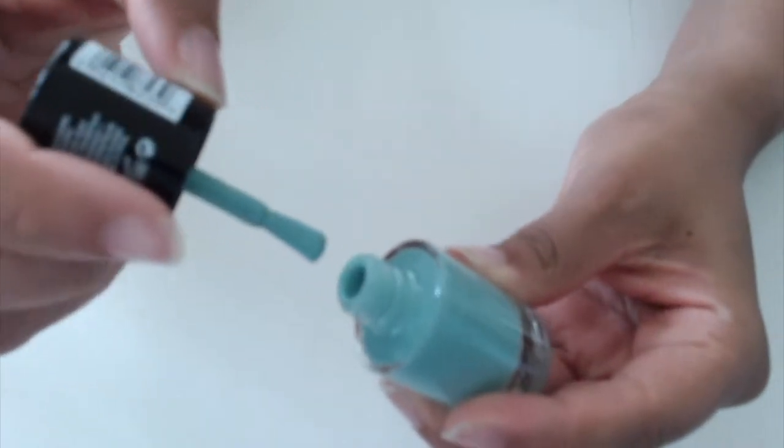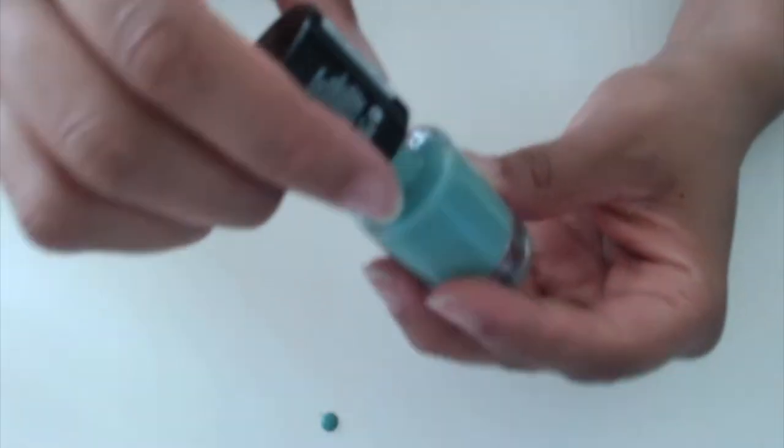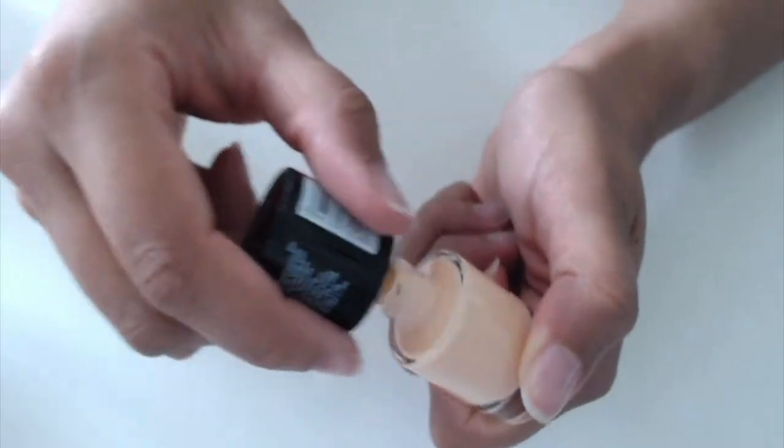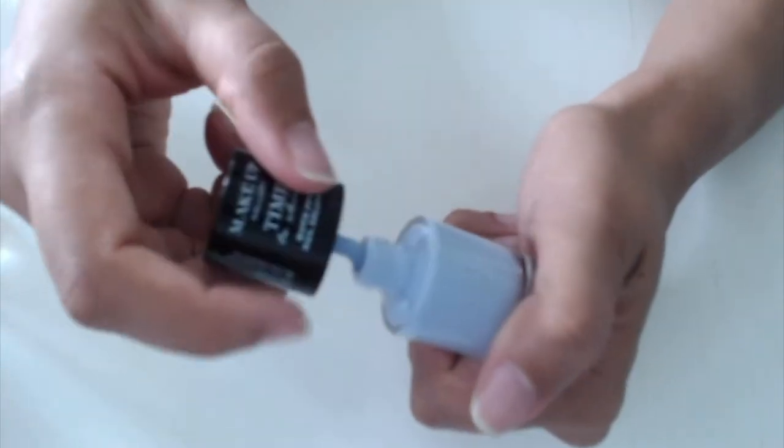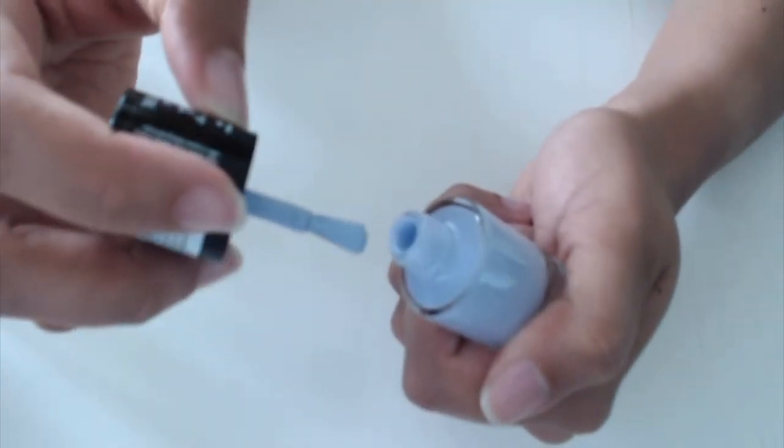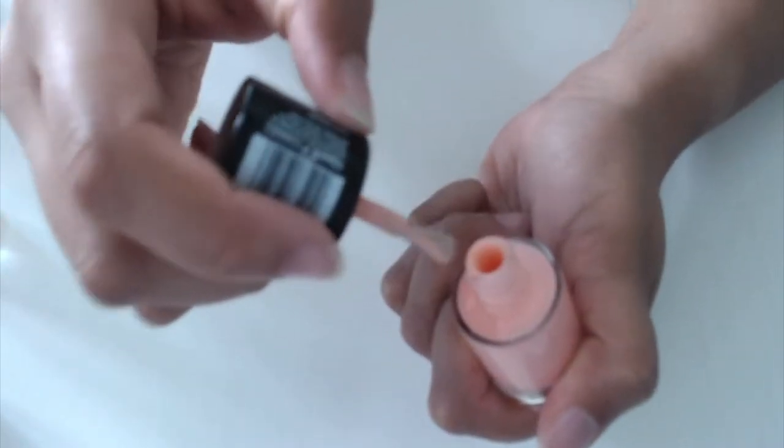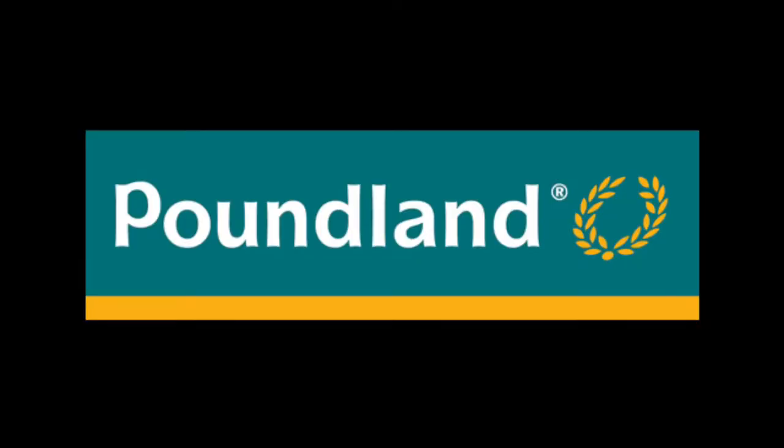Next we have the beautiful Periwinkle number 58. Thirdly we have Pink Soda and this is number 8. Next we have number 42 which is Lavender Cream. And finally we have number 50 which is Flamingo. Would you believe me if I told you all of these were from Poundland? I know, absolutely bargain.